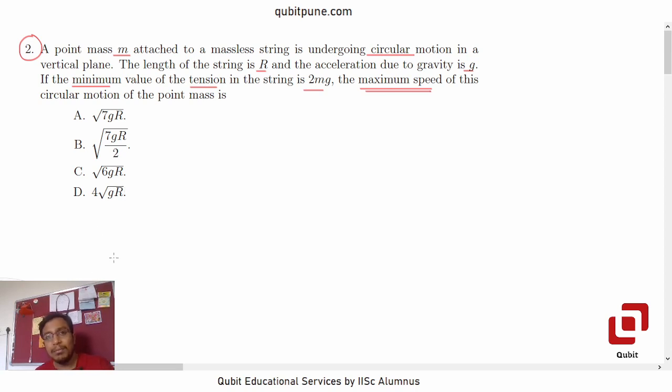This problem can be very easily solved if you know energy conservation. First of all, we recall that in a circular motion, whenever the body is at the top, the tension in the string is the least. So when they say that the minimum value of the tension in the string is 2mg, we should note that this minimum value is of the tension at the top. So that is 2mg.